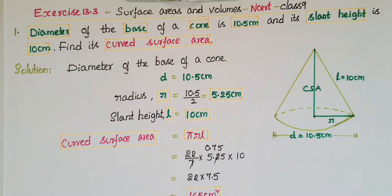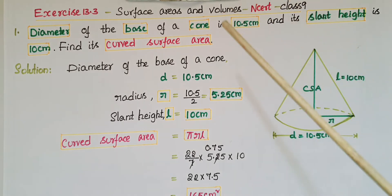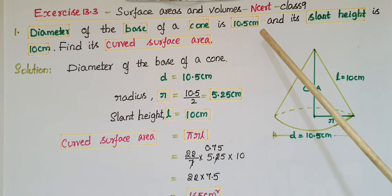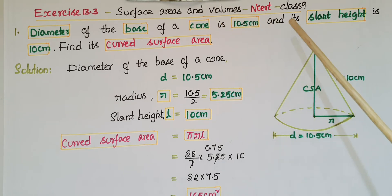Hello everyone, today I am going to tell the solutions of Exercise 13.3 from Surface Areas and Volumes from NCERT Class 9. This is the first problem: the diameter of the base of a cone is 10.5 centimeters and its slant height is 10 centimeters. Find its curved surface area.